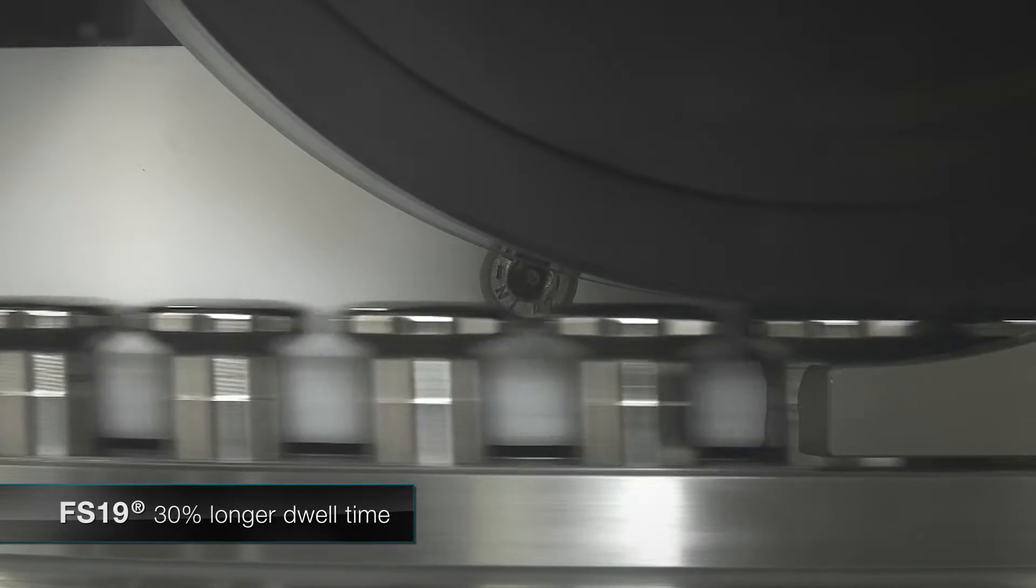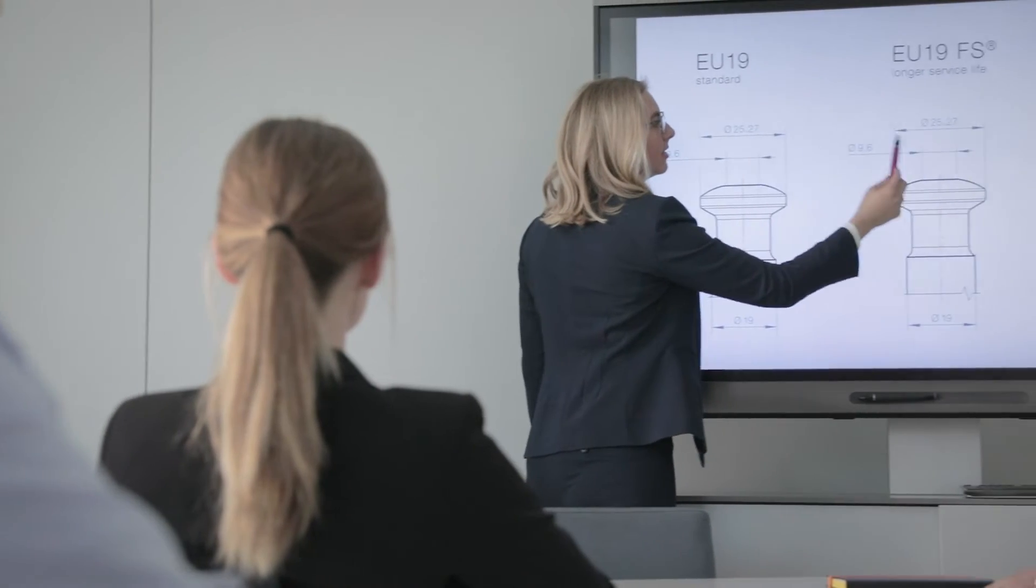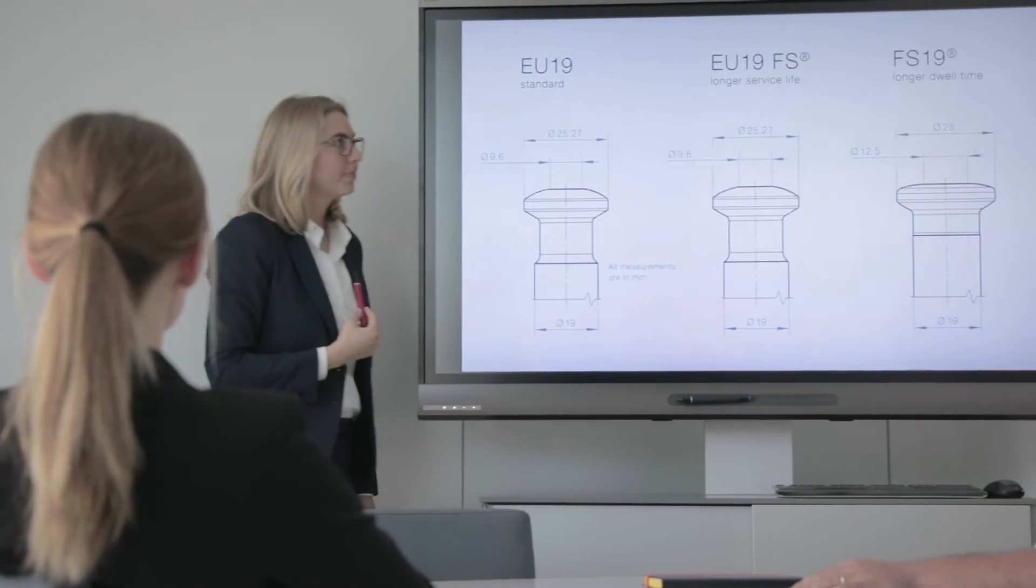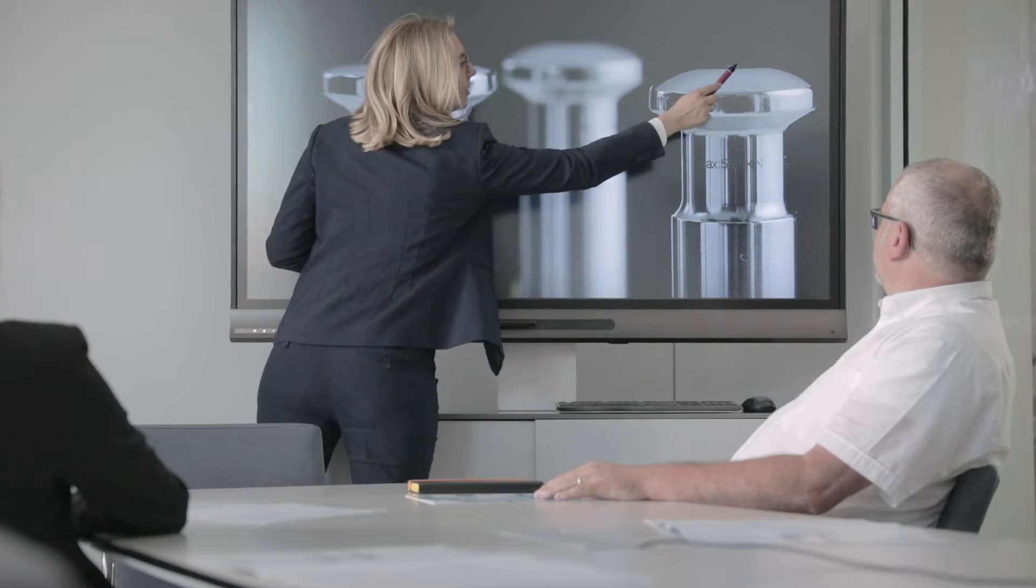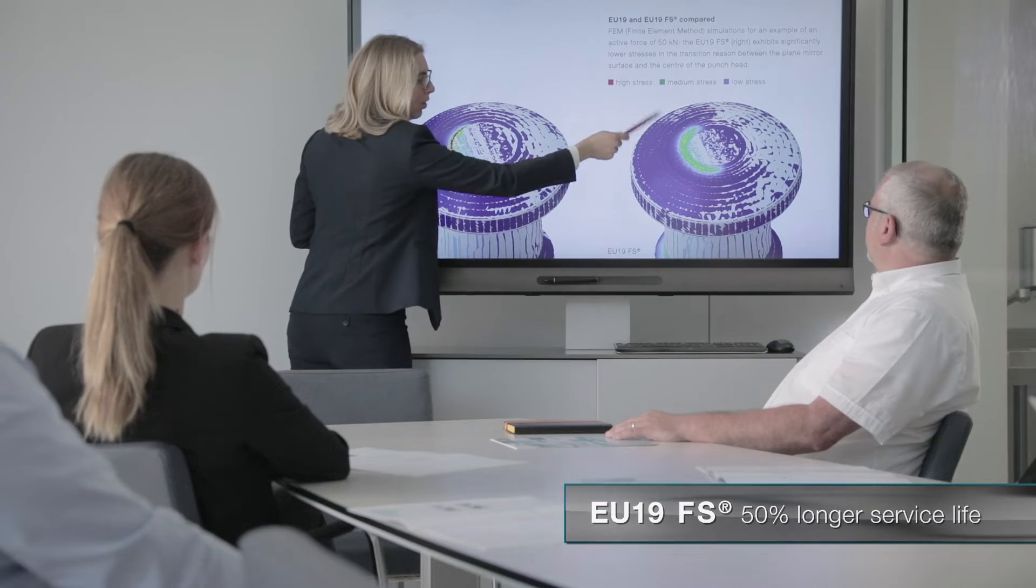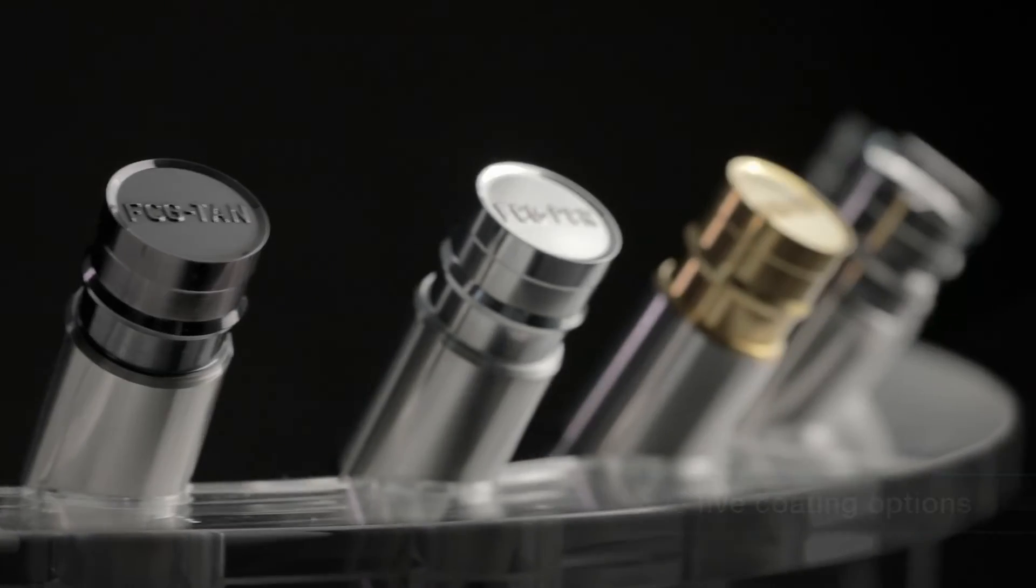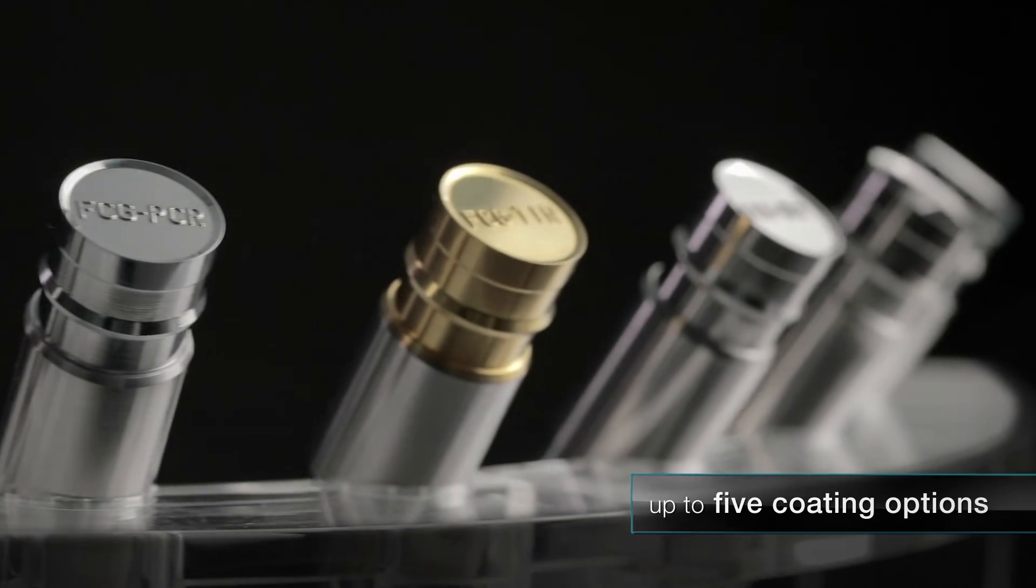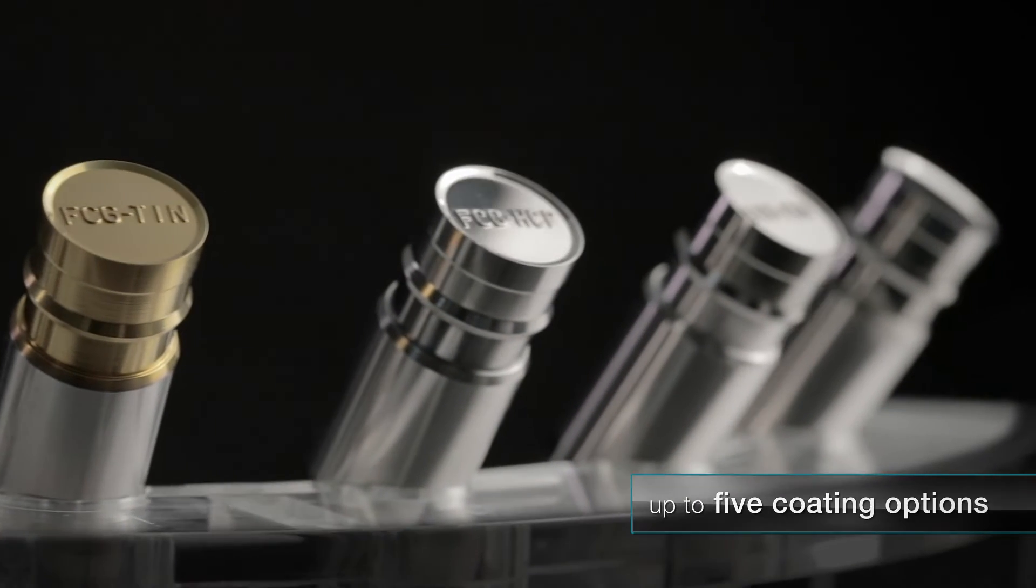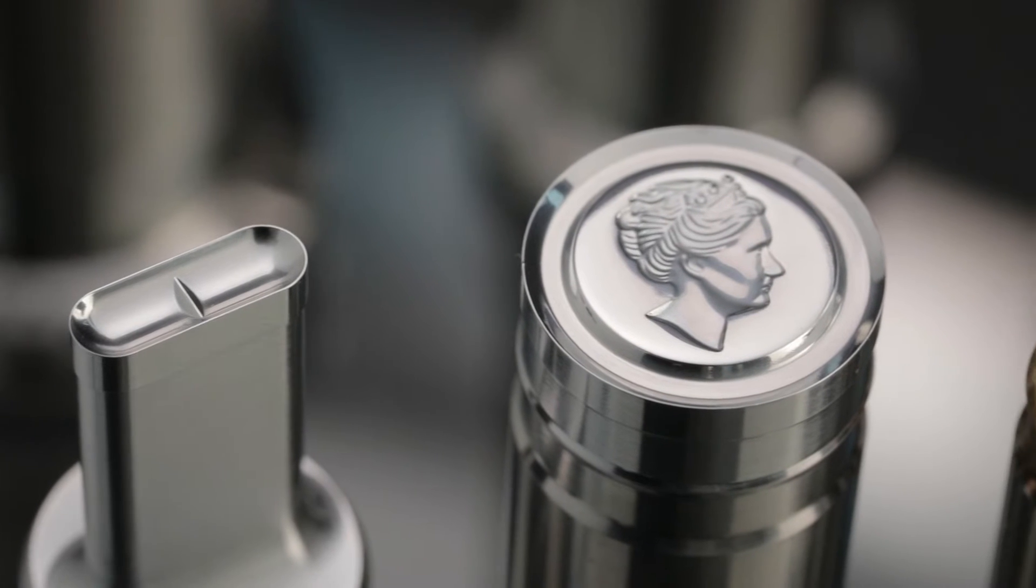For significantly higher tablet quality, another example is the EU 19 FS. Thanks to its optimized head shape, this innovative punch achieves a 50 percent longer tool life. But that's not all - optimally coated tools are an absolute must for long service lives with consistent quality and can be tailored to customer requirements.